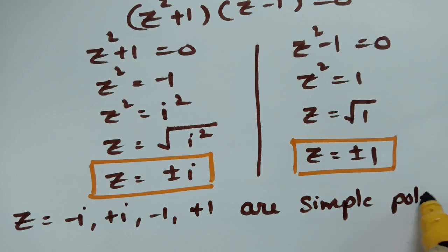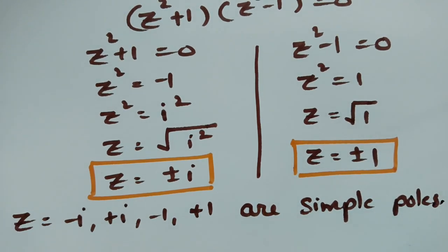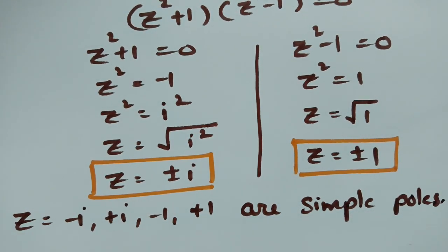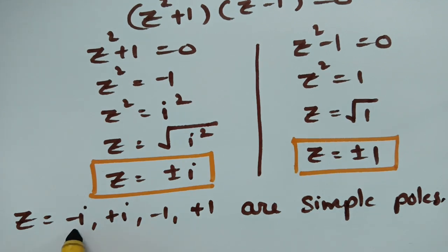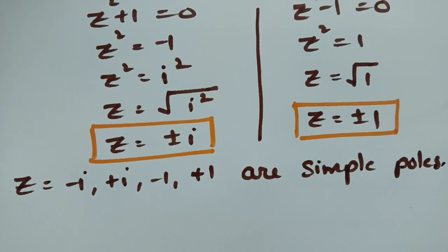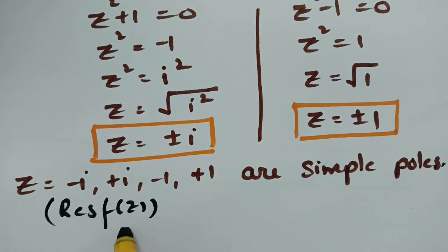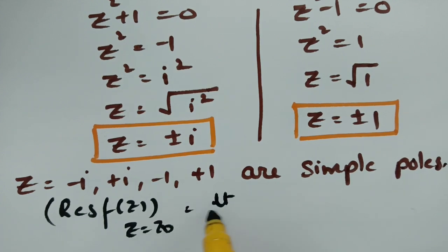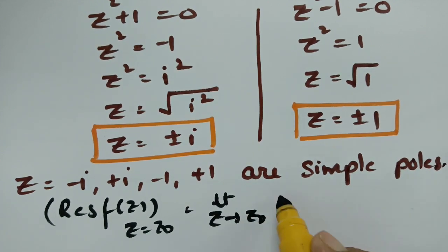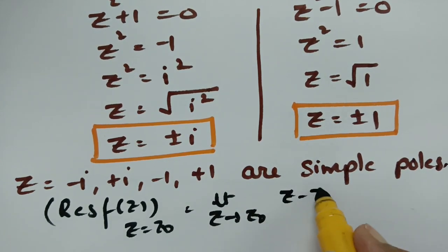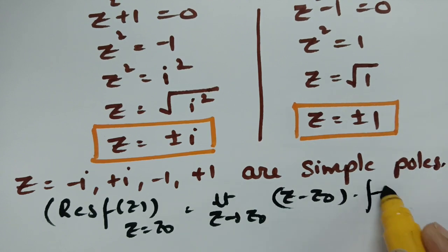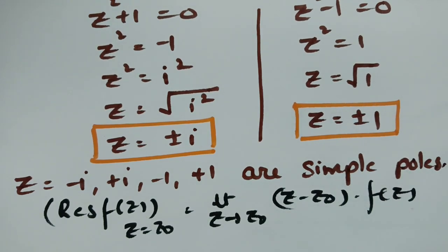Now we have to find the corresponding residue values for the given poles. The residue of f(z) at a point z = z₀ is given by the limit as z → z₀ of (z - z₀)·f(z).